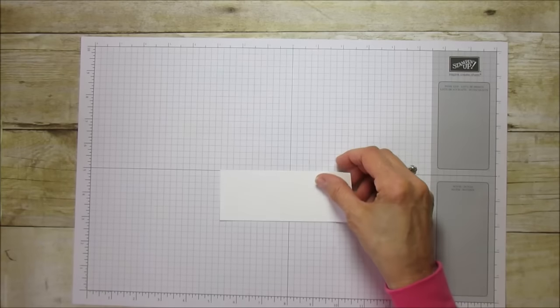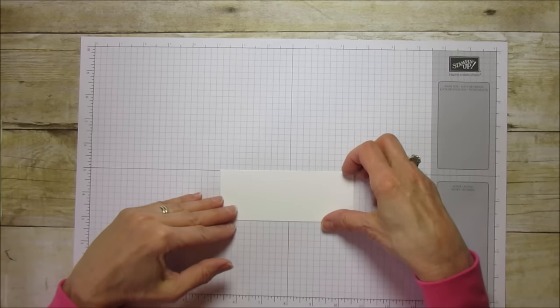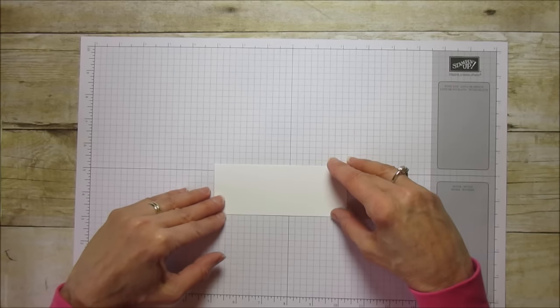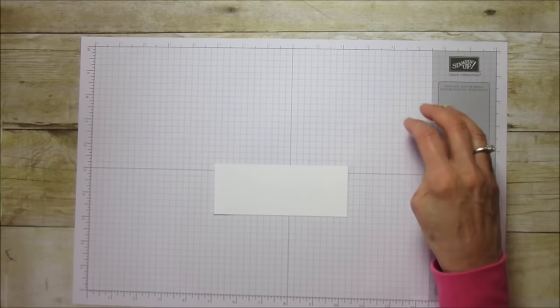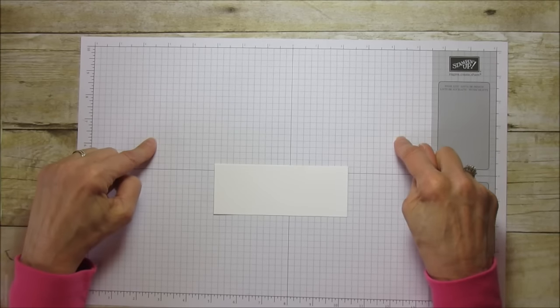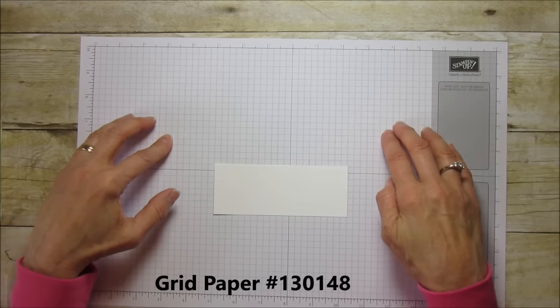First, let's emboss this. You do need a heat embossing gun to emboss with the embossing powder, so I'm going to show you how to do that. I wanted to mention, if you're new to stamping, Stampin' Up carries these grid papers. They're very inexpensive and it's a big stack.